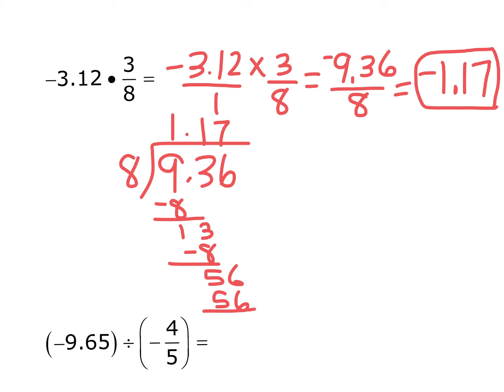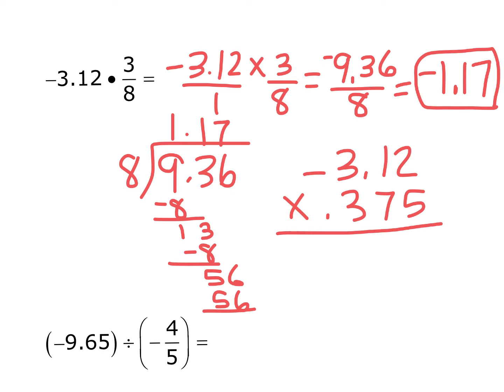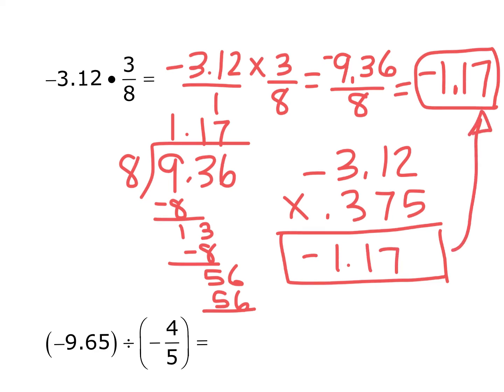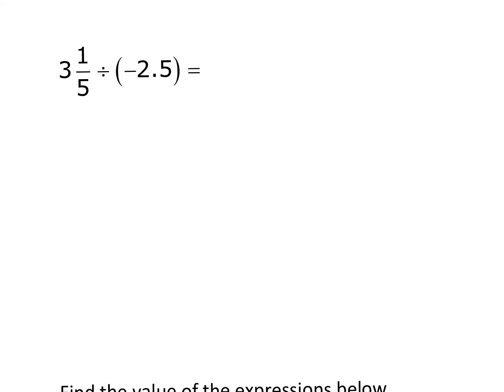Could you have done this as a decimal? Yes — you could multiply negative 3.12 times 0.375 (which is three-eighths). Try that on your own for practice and see if you get the same answer of negative 1.17.